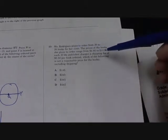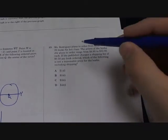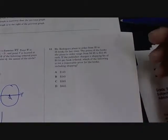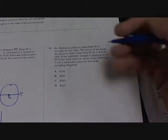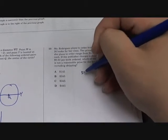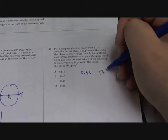The publisher charges a shipping fee of 50 cents per book ordered. Which of the following is not a reasonable price for the books including shipping? What we have to do is add 50 cents to both of these. You add 50 cents to the first one, becomes $5.45. You add 50 cents, the other one is $13.45.